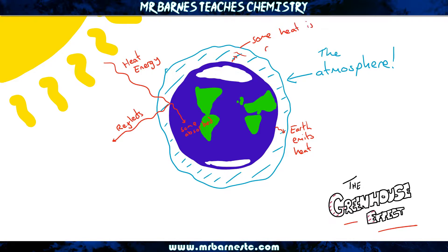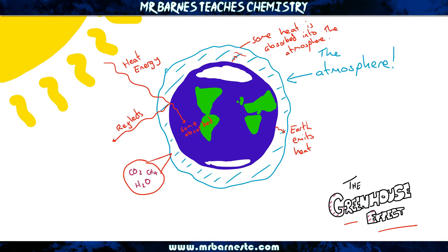The heat that's reflected and emitted gets absorbed into the atmosphere. Now we have greenhouse gases — carbon dioxide, water vapour, methane — all of these are examples of greenhouse gases and they trap the heat in the atmosphere.